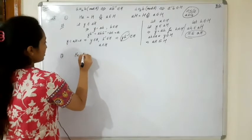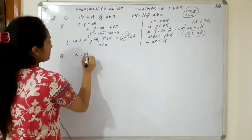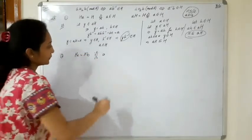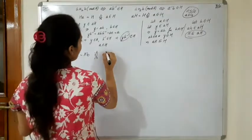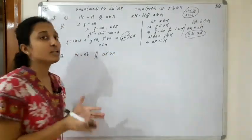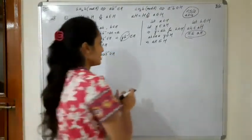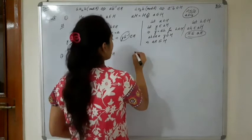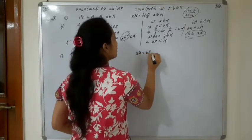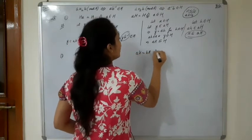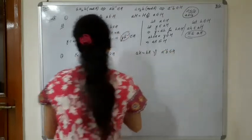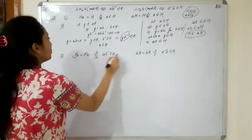Now the second result: Ha is equal to Hb if and only if ab⁻¹ belongs to H. And similarly for left cosets: aH is equal to bH if and only if a⁻¹b belongs to H. Let's move to the right coset case.